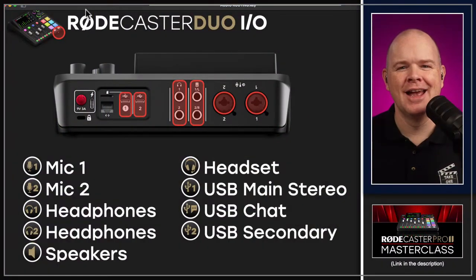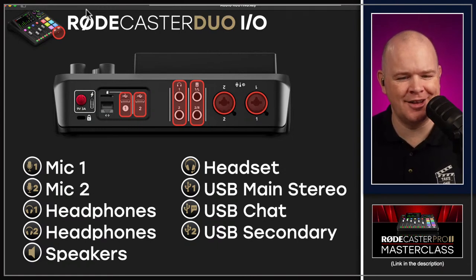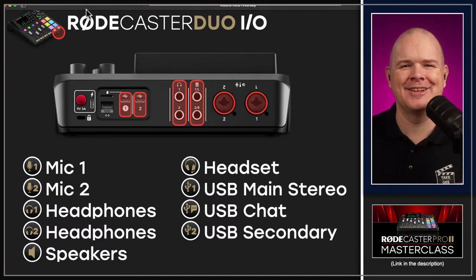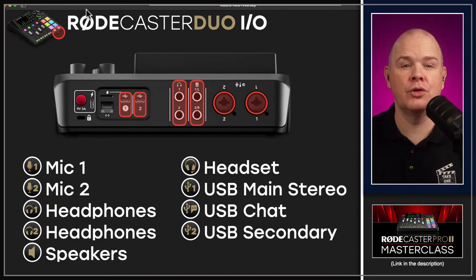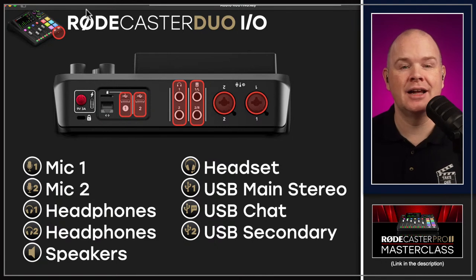I got a little bit ahead of myself there, but basically on the back of the RODECaster Duo, in addition to all of those, we can also see the three USB channels. There are actually two USB sockets. We've got those three USB channels over two separate cables — USB one on the left-hand side, which is the USB main stereo and USB chat channel, and then another one which is USB secondary.